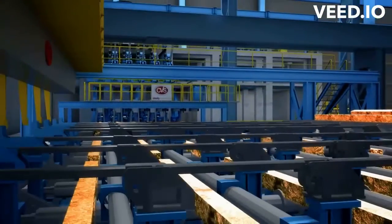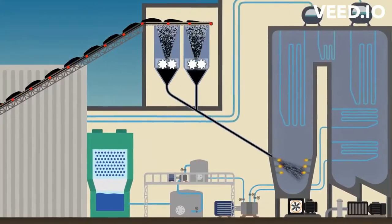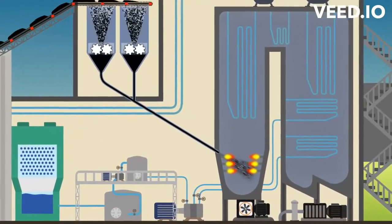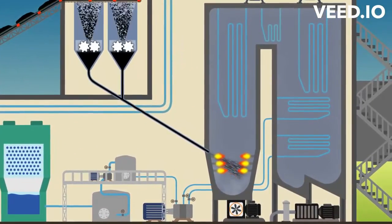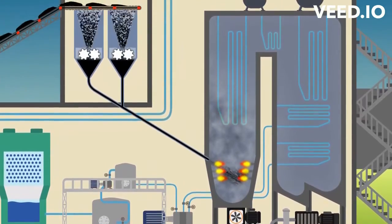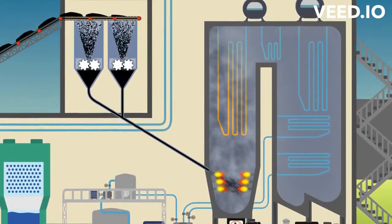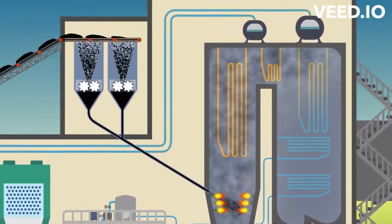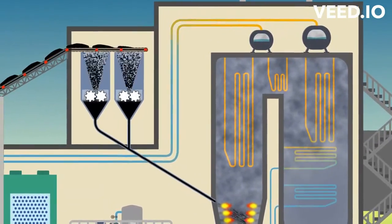Steam coal is mainly used for electricity generation in power plants. It is burned in boilers to produce steam, which drives turbines connected to generators, producing electricity. The lower carbon content and higher impurities are acceptable in this context, as the focus is on generating heat rather than producing high-quality coke.